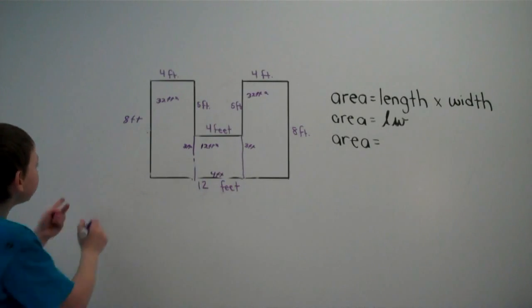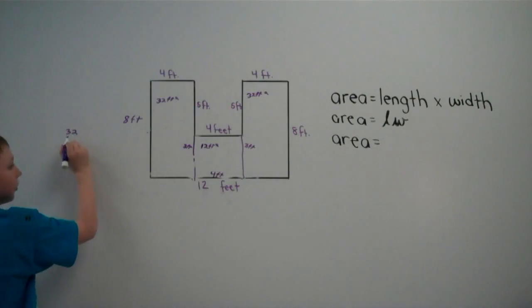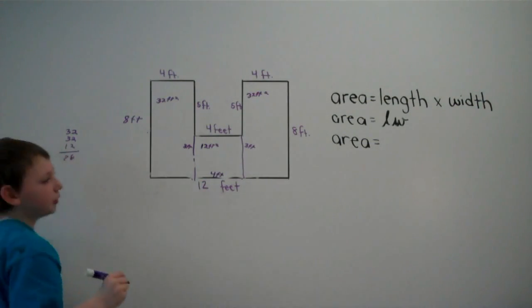So 32 plus 32 plus 12 equals 76 square feet.